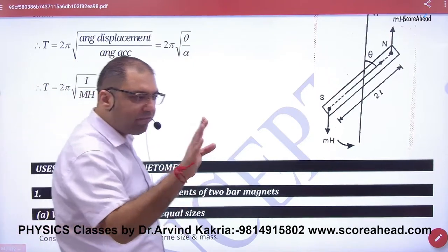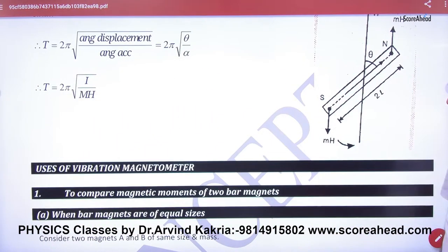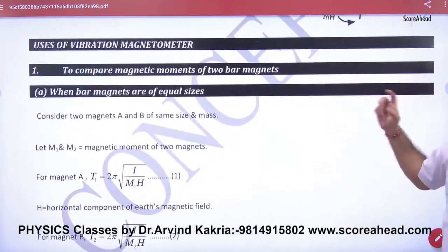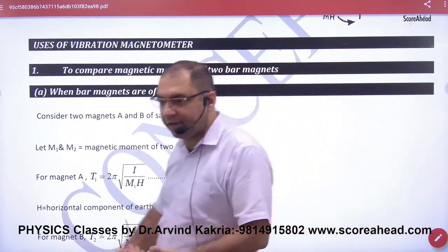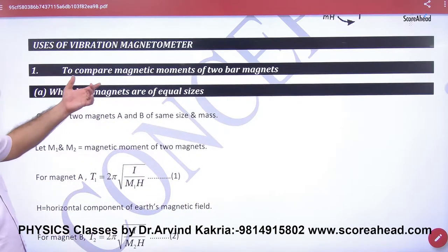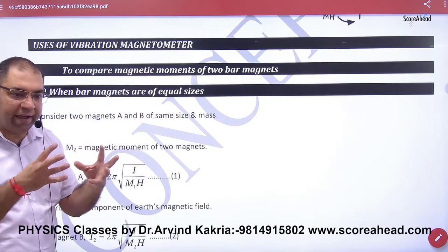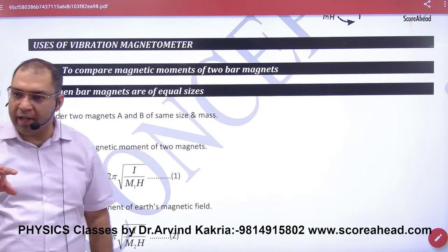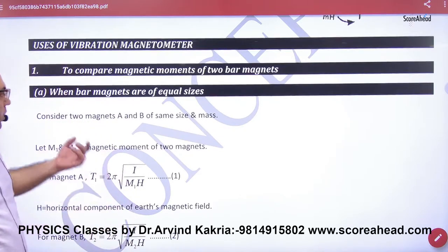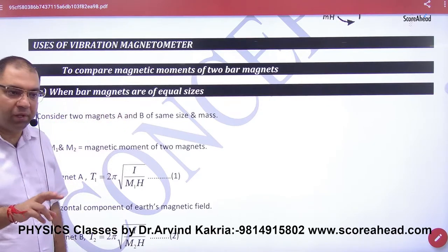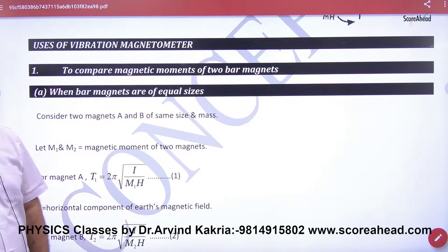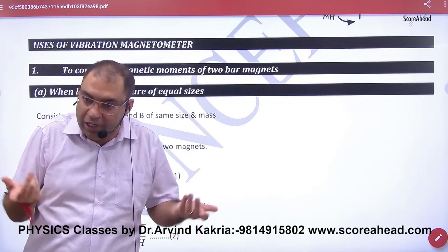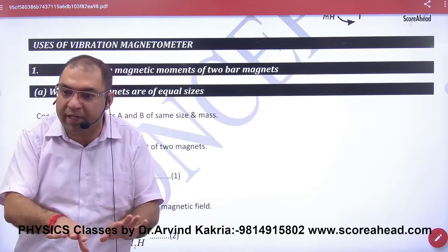Time period is 2π under root of I divided by MH. If you have a question, what will you do? The question will say, suppose you compare the magnetic moments M1, M2 to compare two magnets. This is one of the cases - you have two magnets. The magnets can be equal size or unequal size.